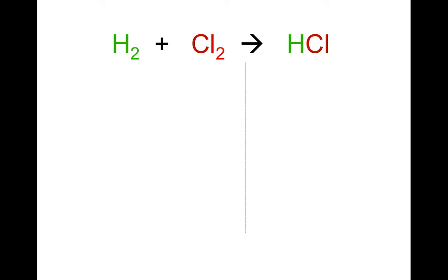In this video, we're going to look at how to balance chemical equations. I have an example up here on the screen right now, where we have H2, which is hydrogen, plus Cl2, which is chlorine. And when these two react, the reaction yields HCl, which is hydrogen chloride.